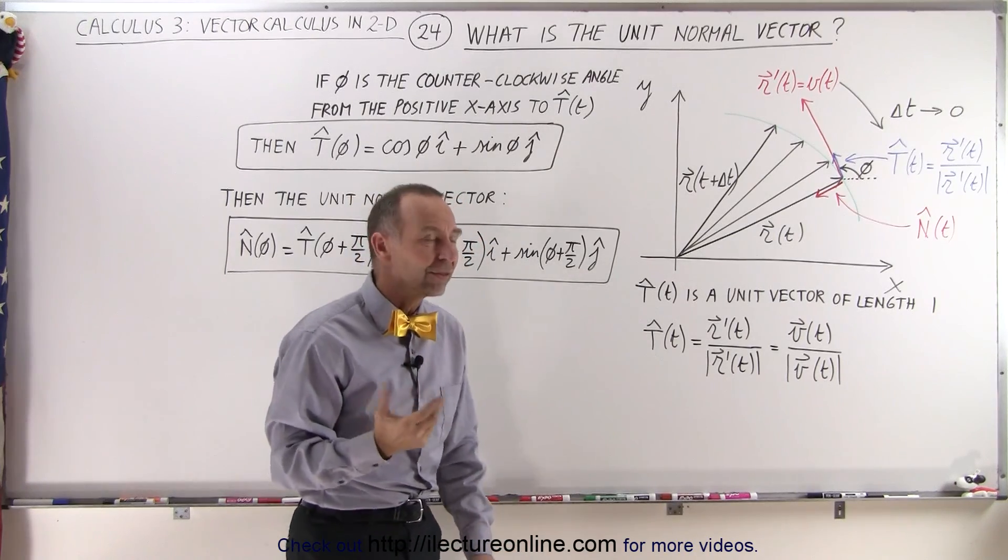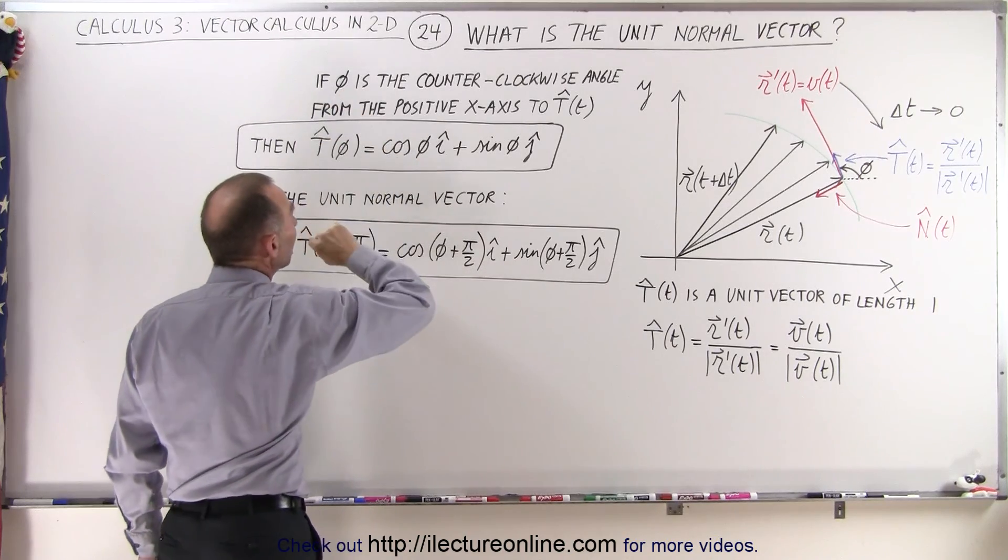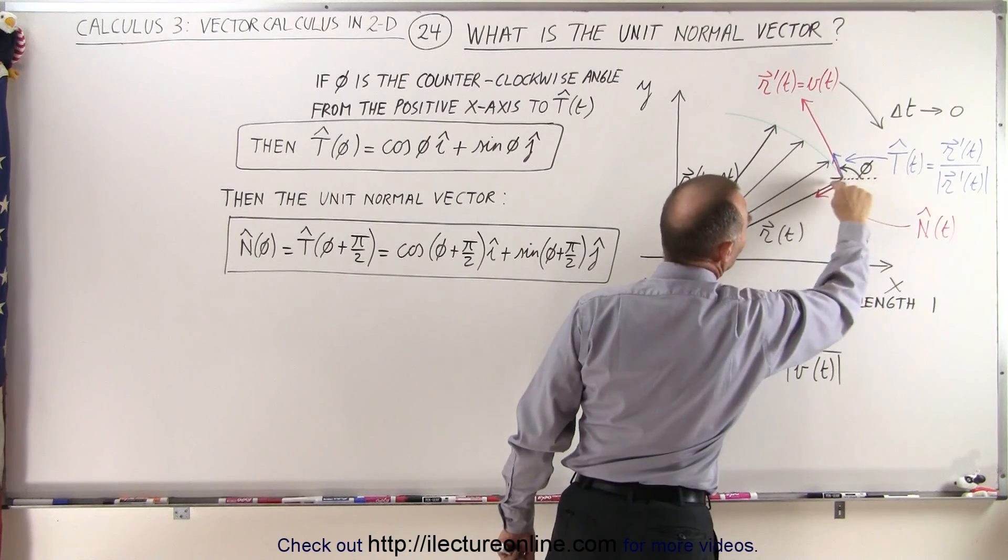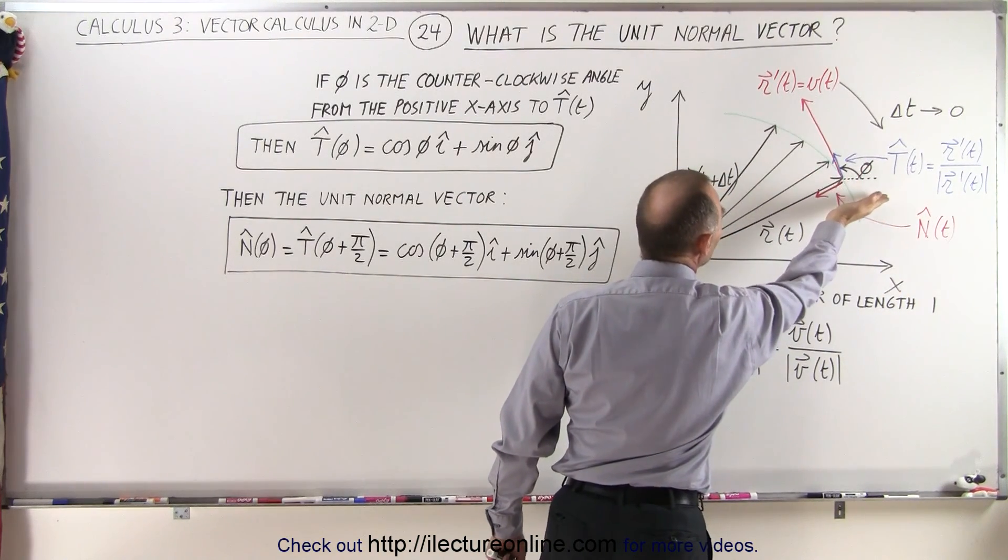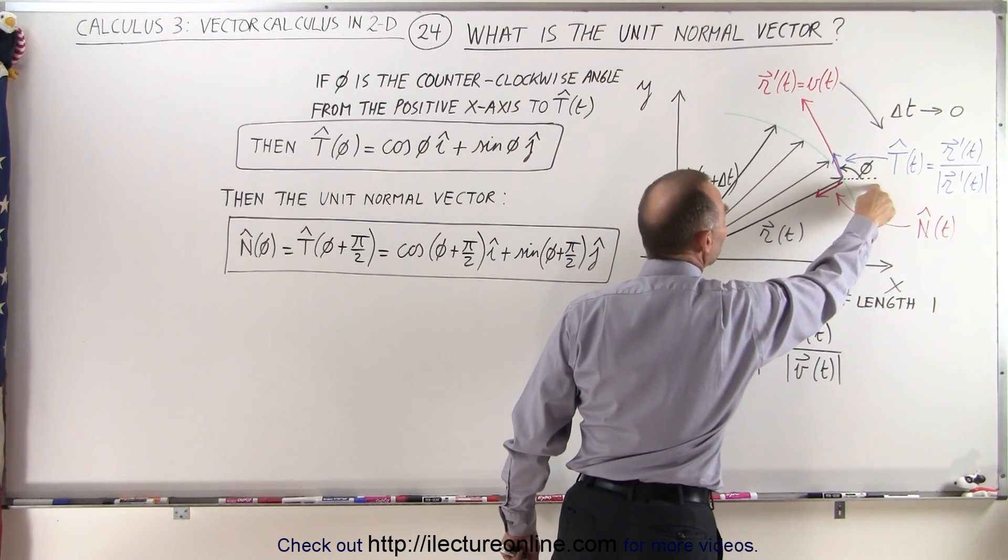So how does that make sense? Well, note that if we define an angle phi with reference to the positive x-axis, so here we have a line parallel to the positive x-axis, and the angle phi is the angle as we rotate counterclockwise from the positive x-direction to the tangent vector.